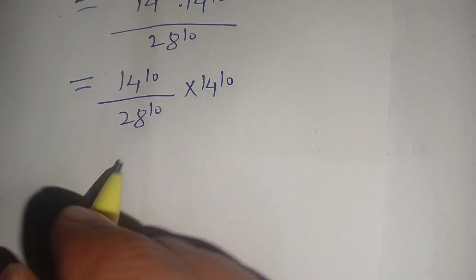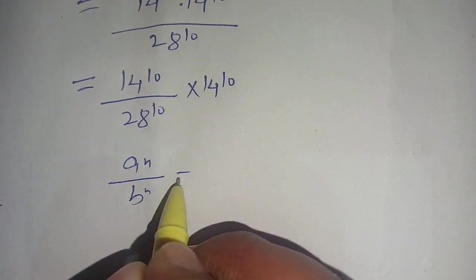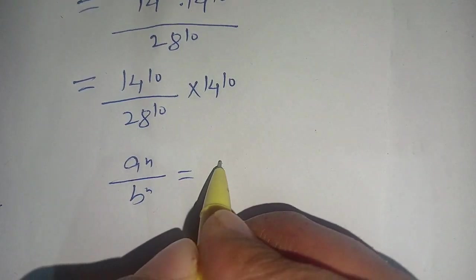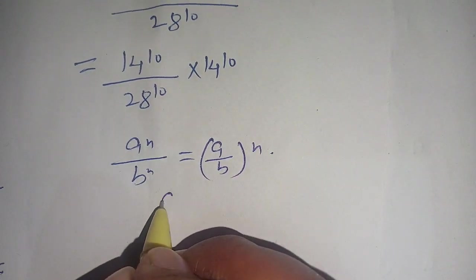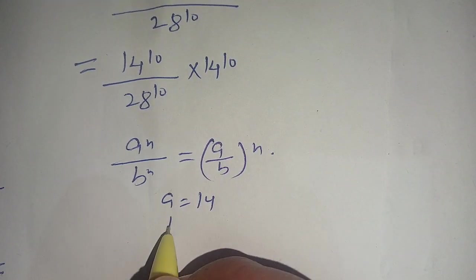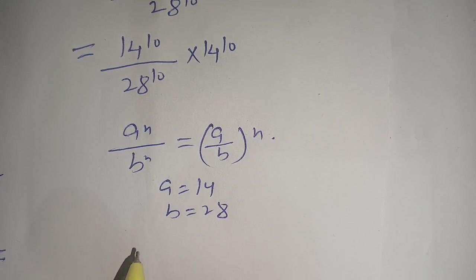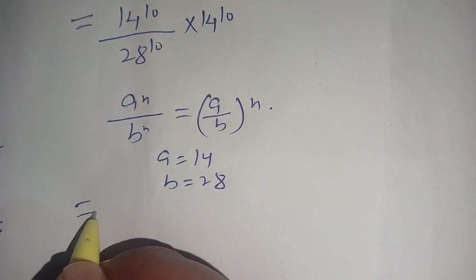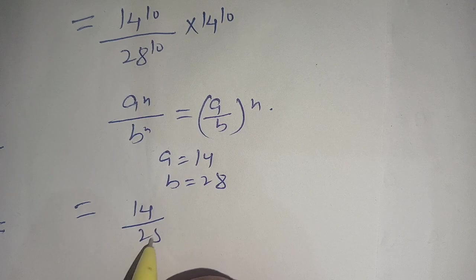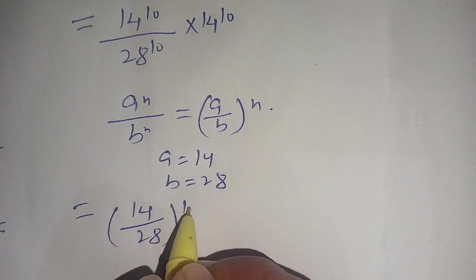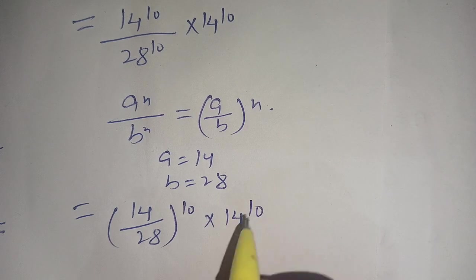Now in the next step, we can rewrite it as 14 power 10 divided by 28 power 10, times 14 power 10. We know that a power n divided by b power n is equal to (a divided by b) whole power n. Here a is equal to 14 and b is equal to 28. Using this identity we get (14 divided by 28) whole power 10, times 14 power 10.